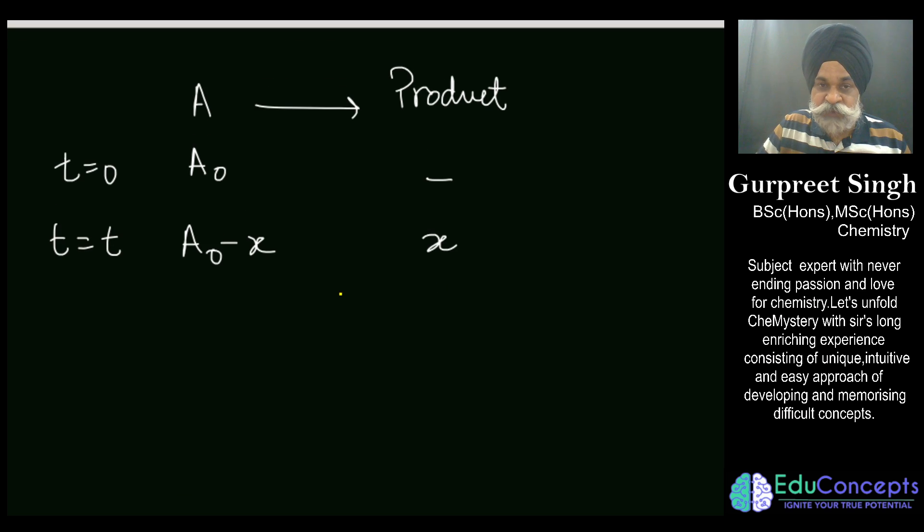So what is it? Initially it is A₀ and after time interval of t, x amount has been decomposed. So here I would define first degree of dissociation which generally people are not clear with, that is alpha.